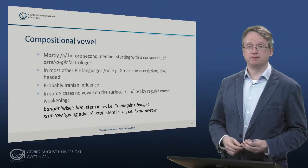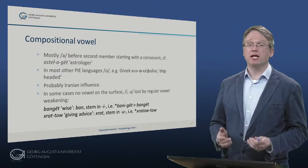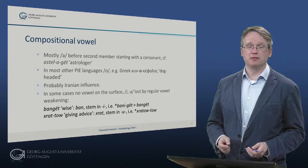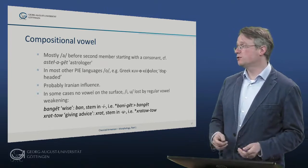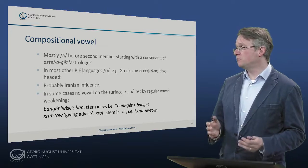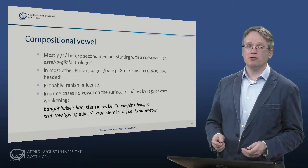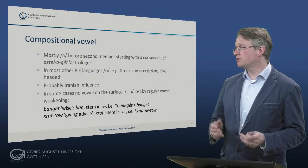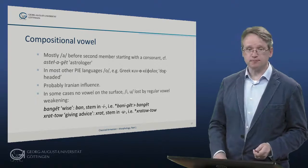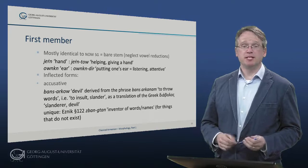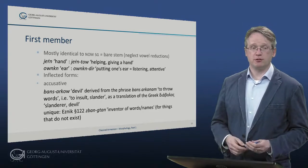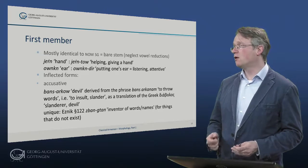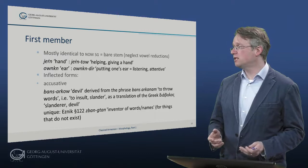In some instances, outside stems ending in a, one can infer that the first member ended in e or u, which has been deleted due to the accent on the final syllable of the compound. For example, ban geet – wise – with ban being a stem in e, so the original compound would be bani geet, reduced to ban geet. In most cases the first member appears identical to the form of the nominative singular. So for example, dzern – hand – and dzern-tu – helping, giving a hand, or unkeen – ear – and unkeen-deer – putting one's ear, that is listening attentively.